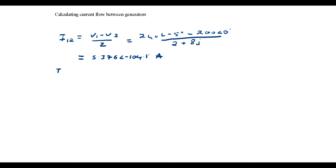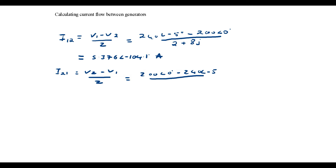The current goes from generator 2 to generator 1. Now let's calculate the current going from generator 2 to generator 1. This is equal to V2 minus V1 all over Z: 200 at a phase angle of 0 degrees, minus 240 at a phase angle of minus 5 degrees, all over Z, equal to 5.376 at a phase angle of 75.88 amps.